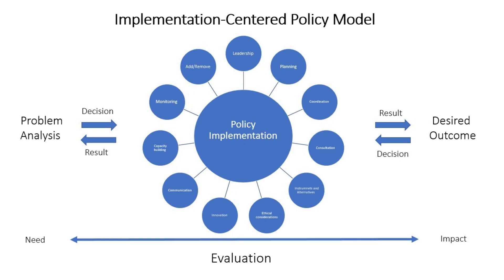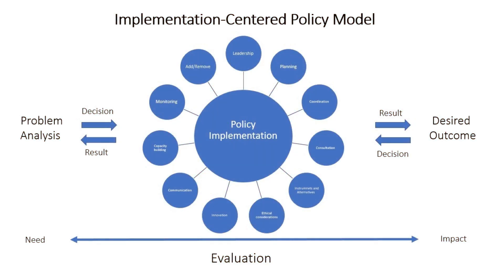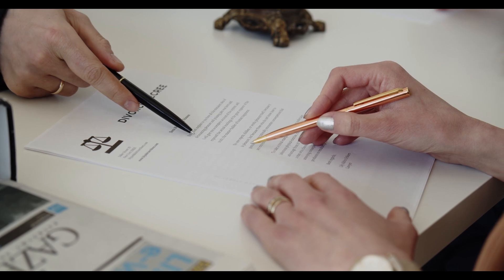Educational Policymaking Process: From Idea to Implementation. Explore the journey of educational policymaking, from identifying issues to evaluating outcomes. Learn about the key stages involved, including agenda setting, policy formulation, adoption, implementation, and evaluation. Discover how various stakeholders contribute to shaping policies that impact our education system.